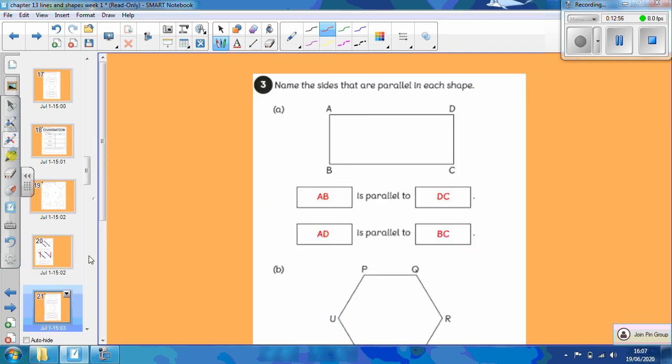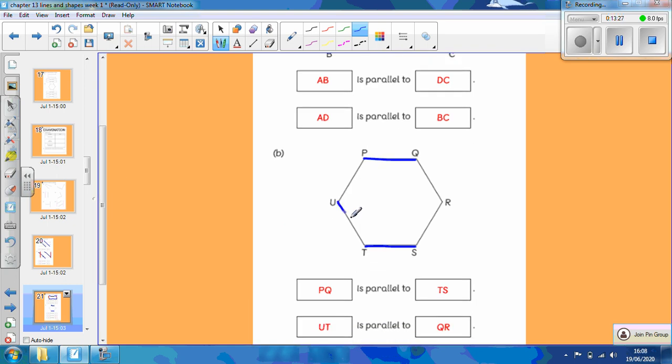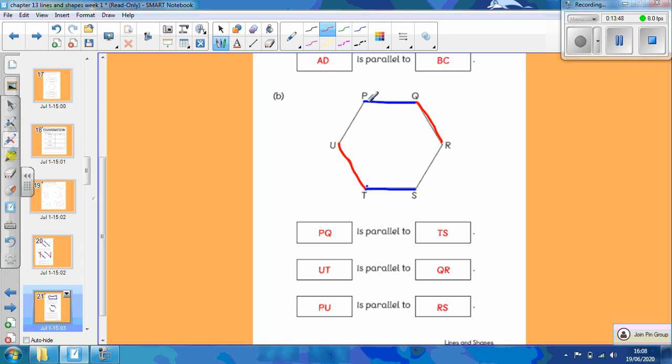Number 3, name the sides that are parallel in each shape. The line AB is parallel to the line DC. This is similar to the one we did in our guided practice. And the line AD here is parallel to the line BC. Oh, lots of parallel lines in this one. PQ, let's start with that one, is parallel to TS. Which one next? UT, this one is parallel to QR. I should do that in a different colour. So we've got UT here, it's parallel to QR. I wonder if you can spot the last one before we get there. And we've got, let's use green, the line PU, it's parallel to the line RS.